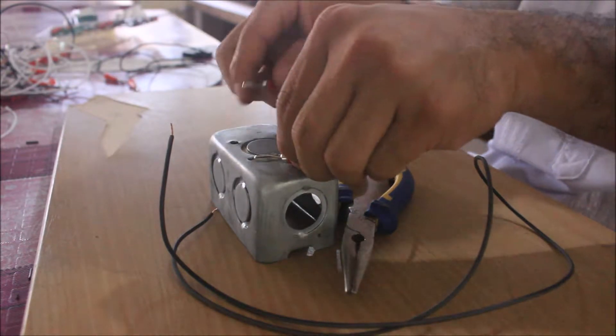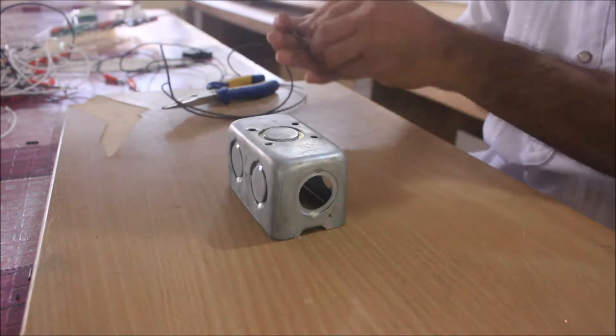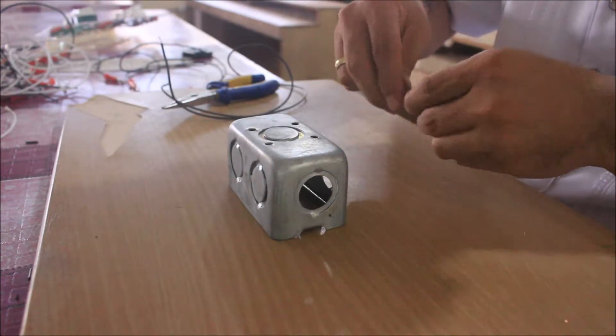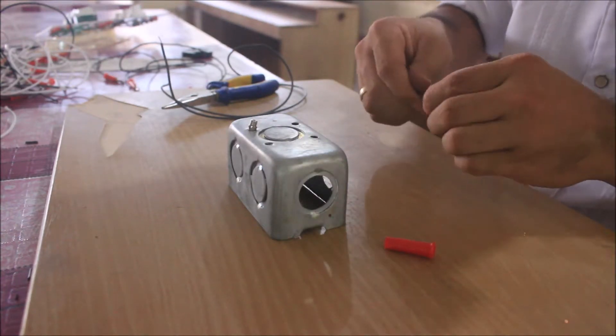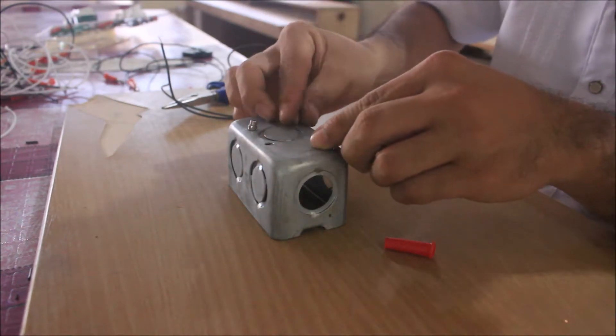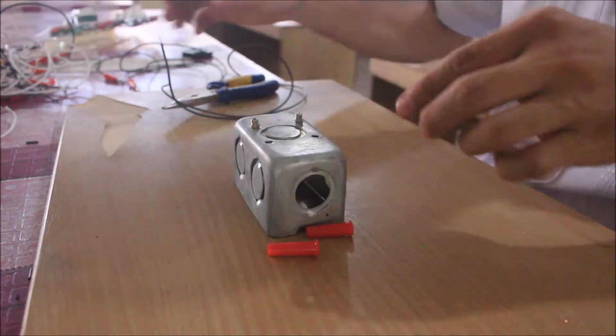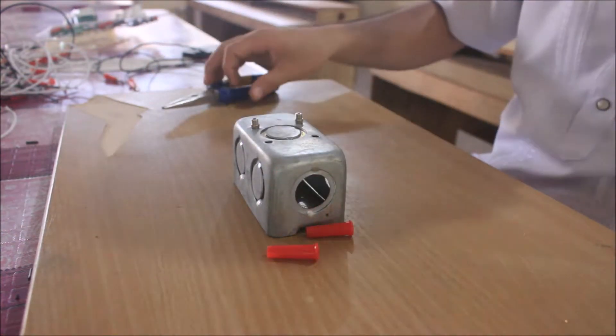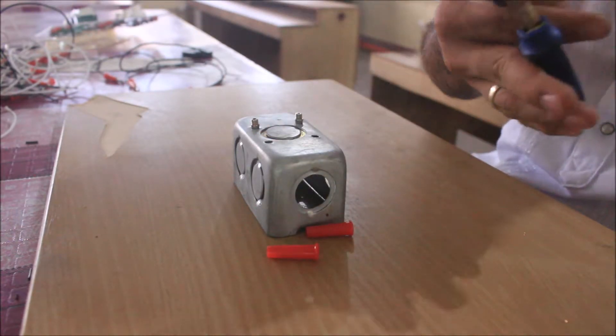Okay so this time let's do the soldering. First I will be removing the metallic part of the banana jack and I inserted it in the holes of the utility box.